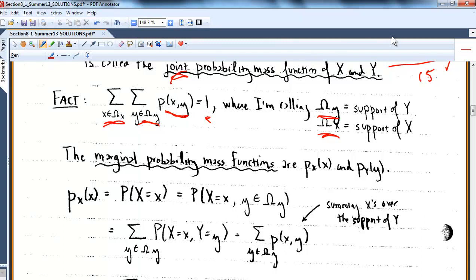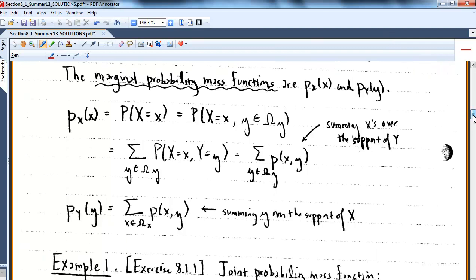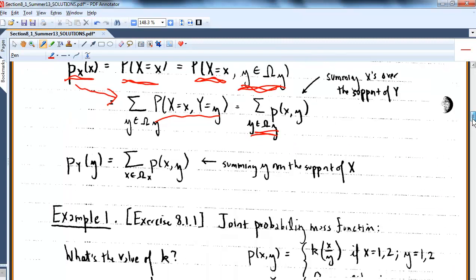If you break apart the joint into its pieces, you get marginal mass functions. P of X, the probability X is equal to X, I'm going to hold X constant and sum over the Y's to get the probability X is X as I look across all the Y's. So to get P of X, I'm taking my joint and summing it over the Y's. P of Y is just the joint summed over the X's. I've got to show you an example because this probably is not making sense.